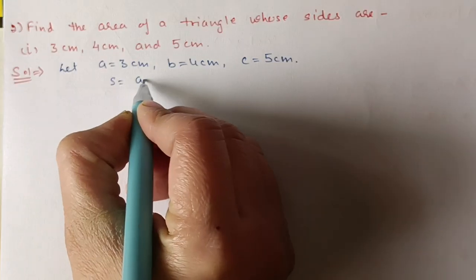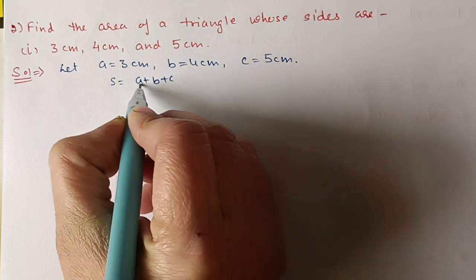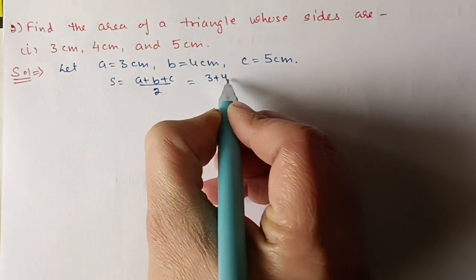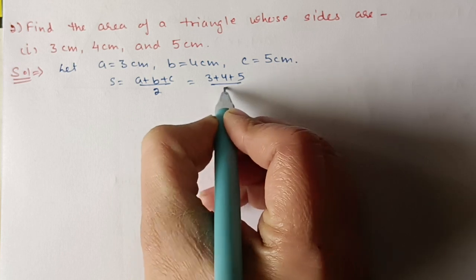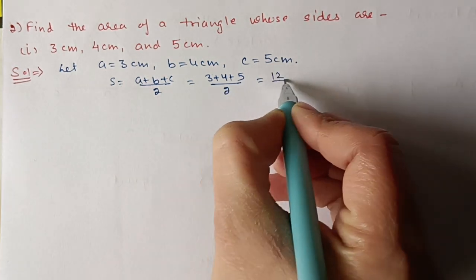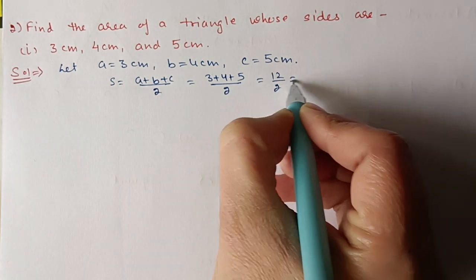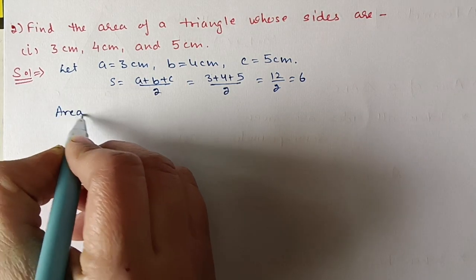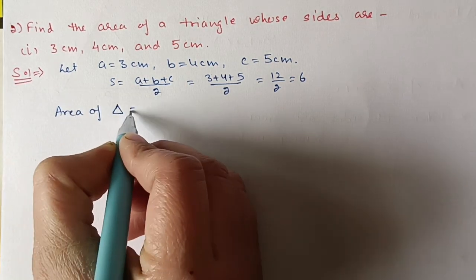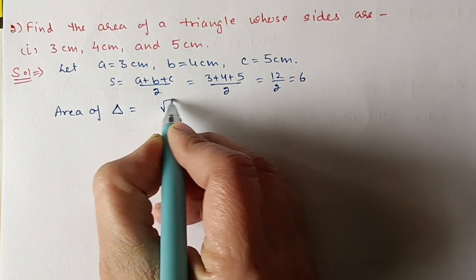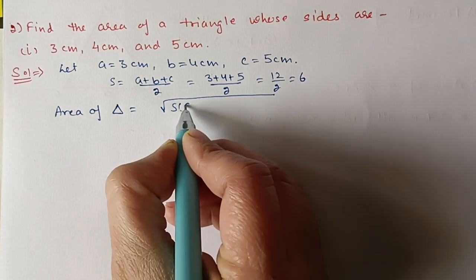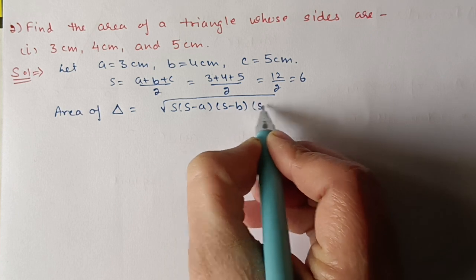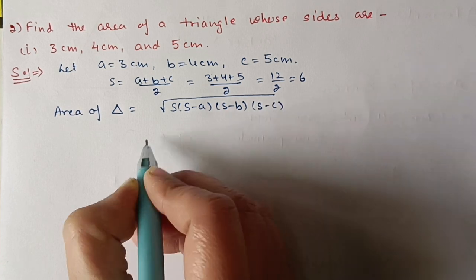s = (a + b + c)/2 = (3 + 4 + 5)/2 = 12/2 = 6. So s = 6. Now, area of triangle = √[s(s−a)(s−b)(s−c)]. Substituting the values: